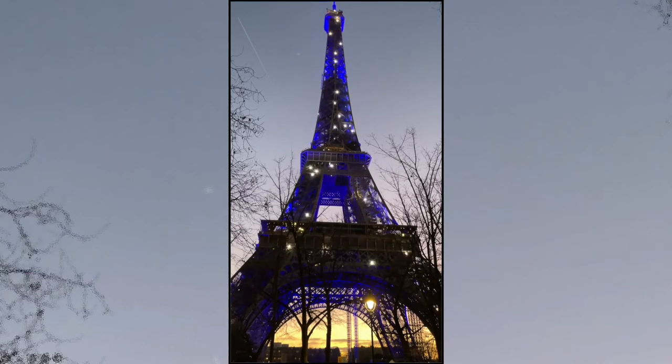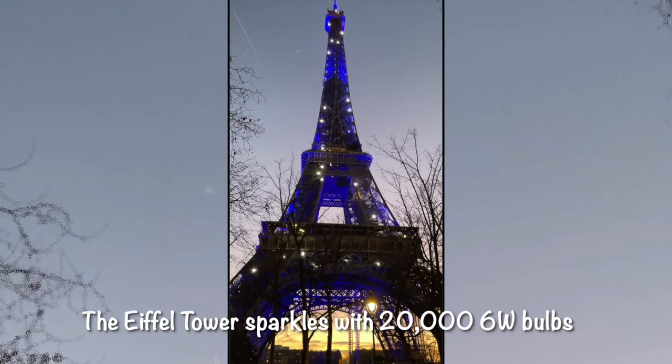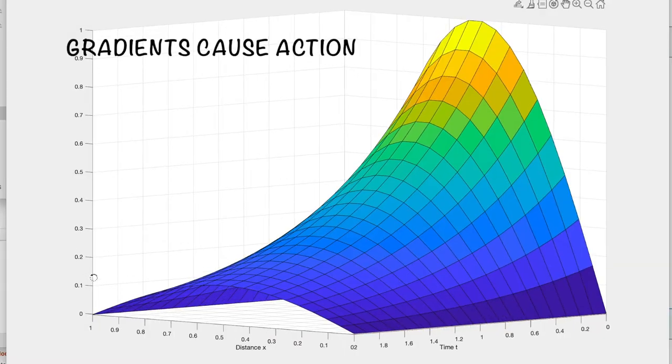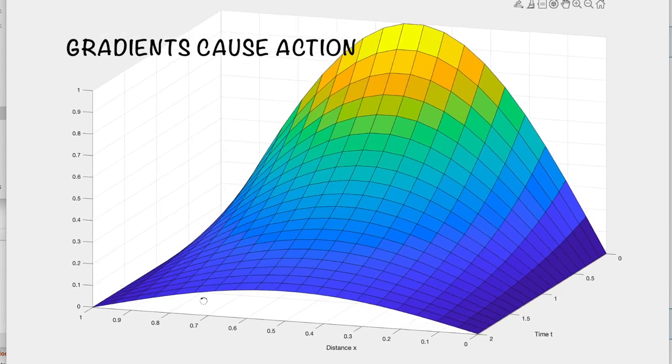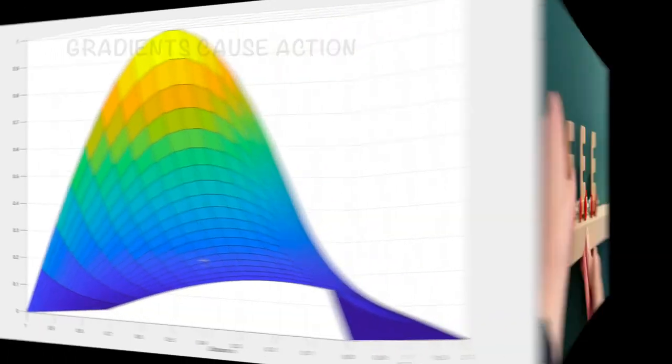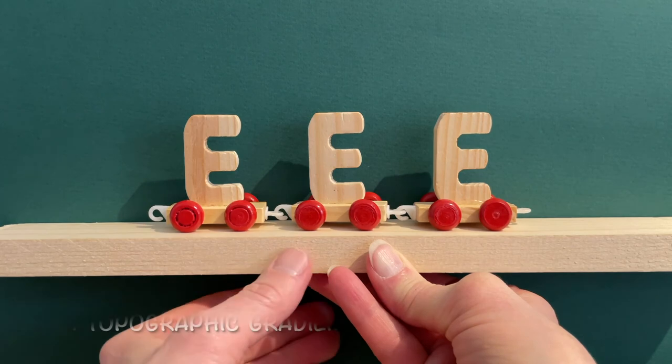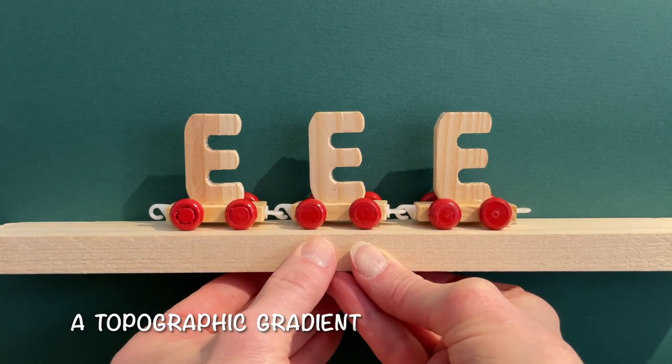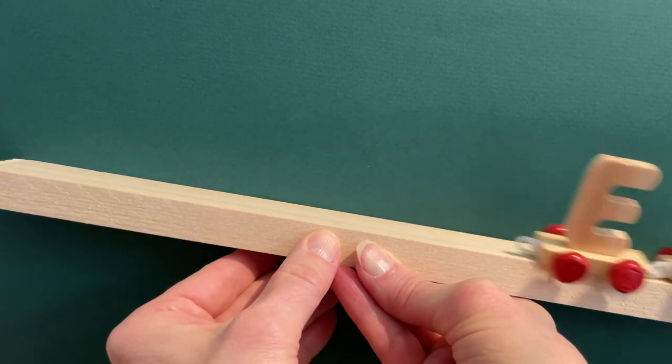Electricity is just electrical charge in motion. To create motion of any kind, we need to provide a gradient. A gradient is a set of unequal conditions. When everything is the same everywhere, nothing happens. For example, when the slope of this surface is zero, nothing moves. But if I tilt it to give it a topographic gradient, then the train cars move.